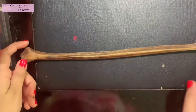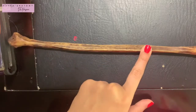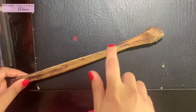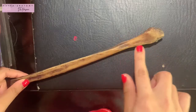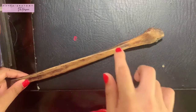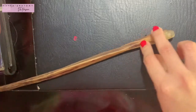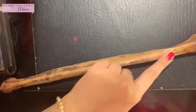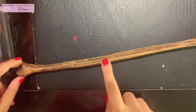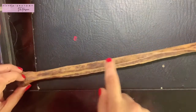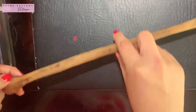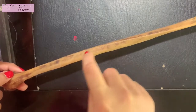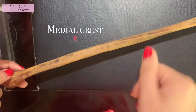The shaft of the fibula has a very sharp anterior border. In its lower part, the anterior border divides into two lines, enclosing a triangular area at the lower end. Then we have the fibula's medial border and finally a posterior border. The surfaces of the fibula are the lateral surface, the medial surface, and the posterior surface. The posterior surface has a very prominent ridge known as the medial crest, which divides the fibula into medial and lateral parts.